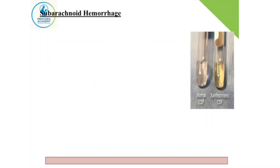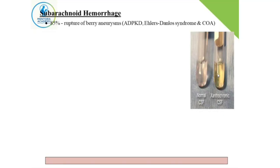Next is subarachnoid hemorrhage, where the bleeding is in the subarachnoid space, which normally contains CSF. Most of the time it's due to rupture of aneurysms, as the arteries travel through the subarachnoid space before entering the brain. The most common cause is rupture of a berry aneurysm, which has a common association with autosomal dominant polycystic kidney disease. It could also be due to arteriovenous malformation, trauma, or tumors.